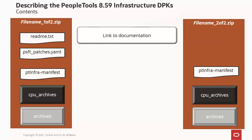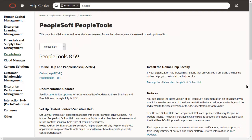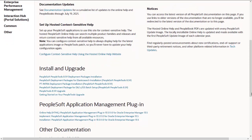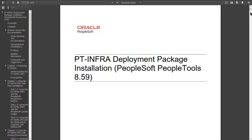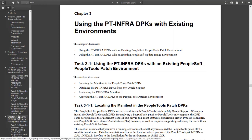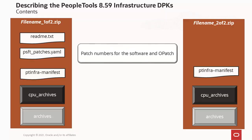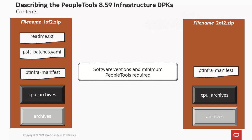The first zip file, labeled 1 of 2.zip, includes readme.txt, which points you to the documentation. Review the documentation before you continue. On the PeopleTools page in Oracle Help Center, scroll down to the Install and Upgrade section and select the link for PT-ENFR DPK Deployment Packages Installation for PeopleSoft PeopleTools 8.59. The Installation Guide includes tasks for the various use cases you will encounter. Both zip files include the PT-ENFR-MANIFEST.